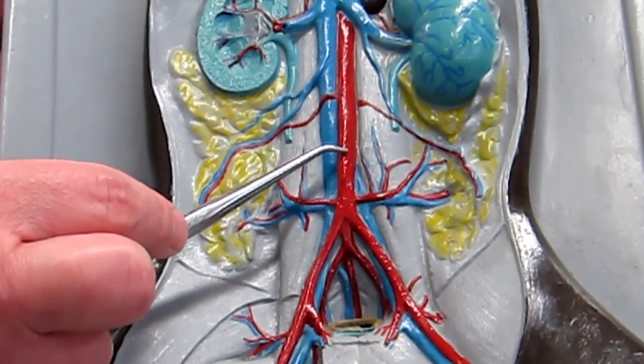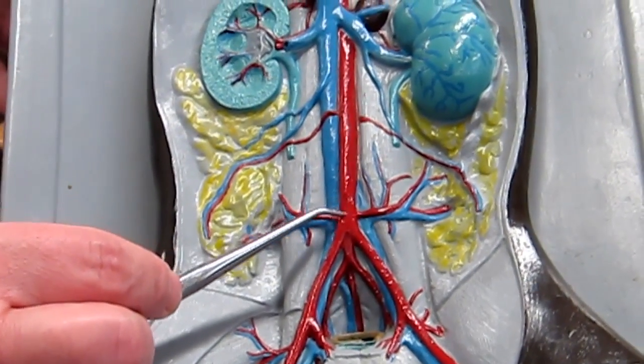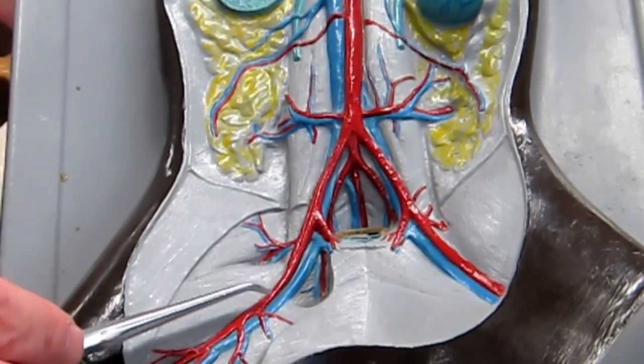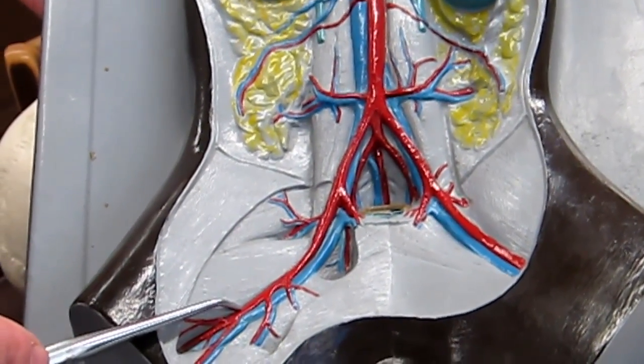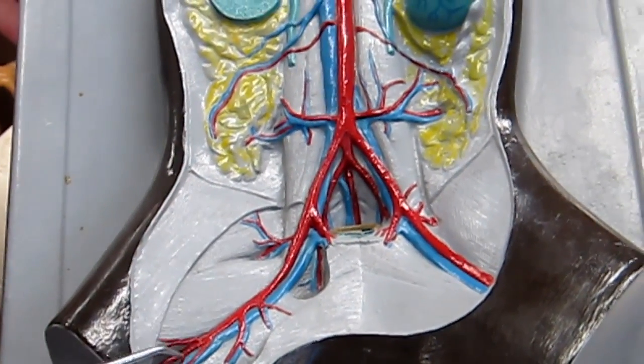Because if we're starting at the abdominal aorta in the arteries, we would go directly into the external iliac and then into the femoral as we're heading into the leg. There'd be no common iliac in between.